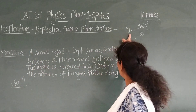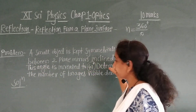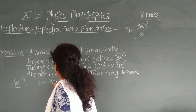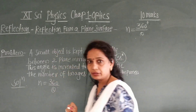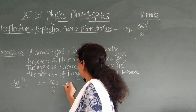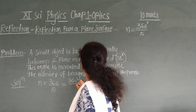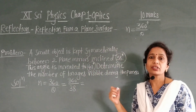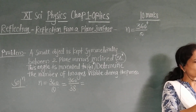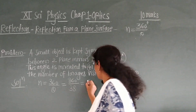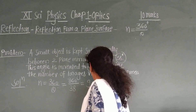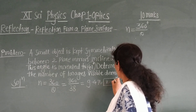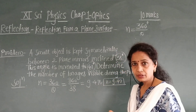In the solution, first for angle 38°: n = 360 / θ = 360 / 38 = 9.47. So we get n = 9.47.